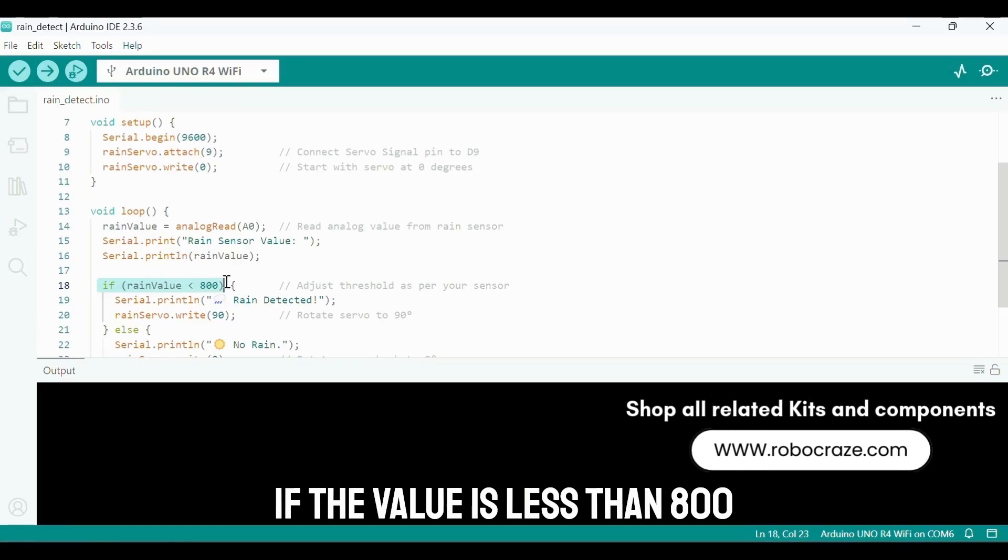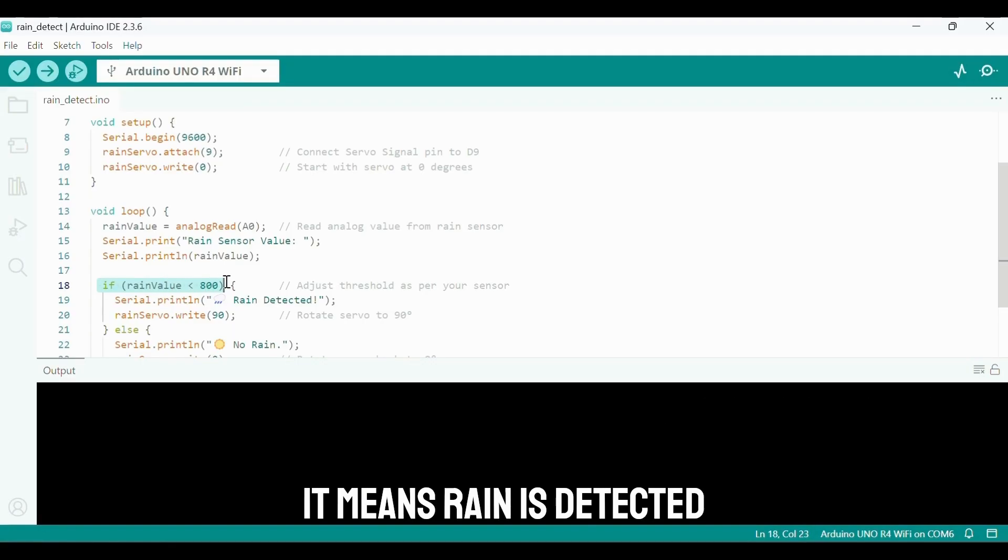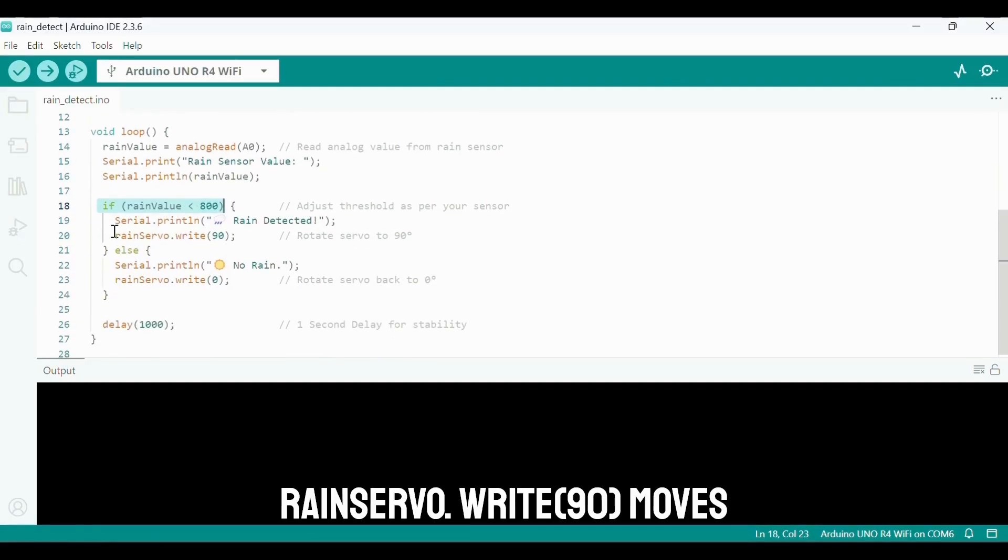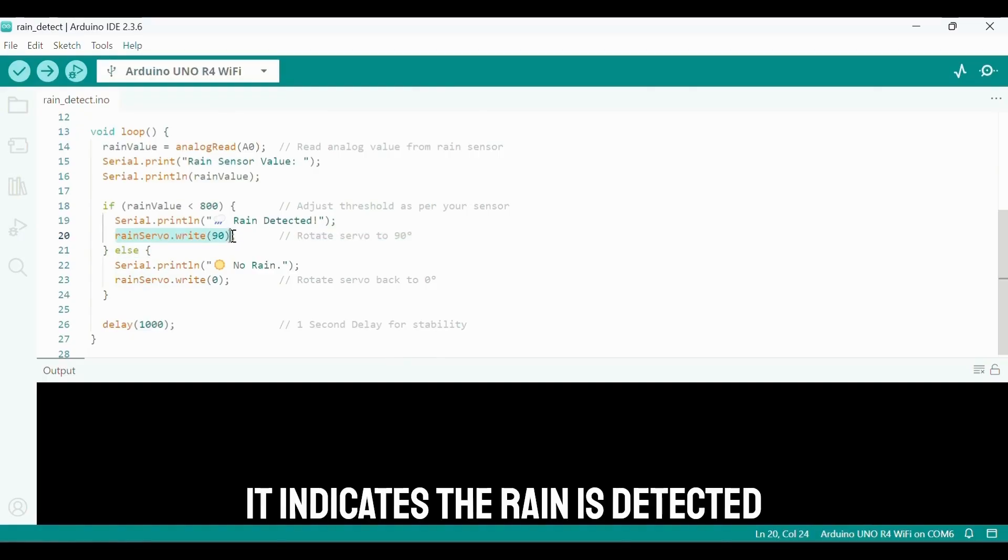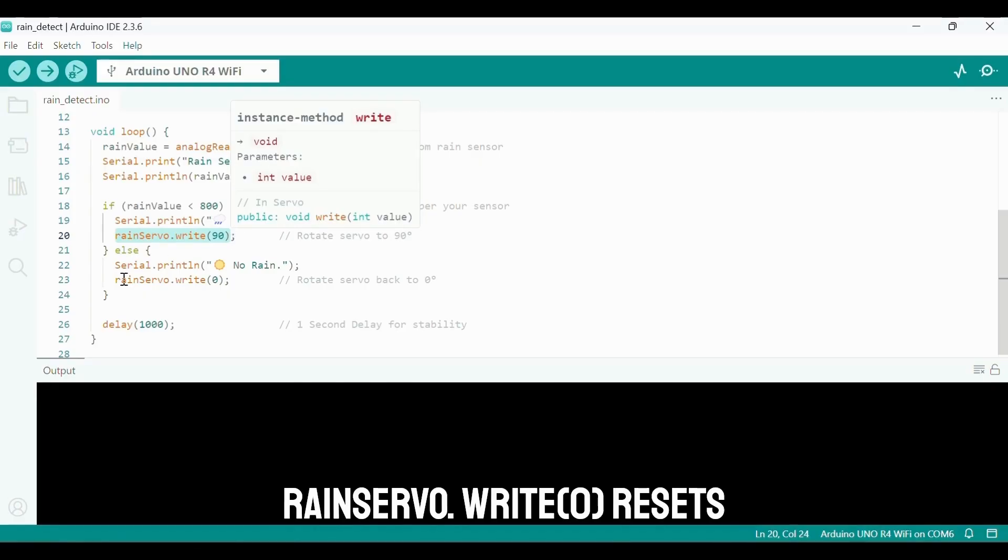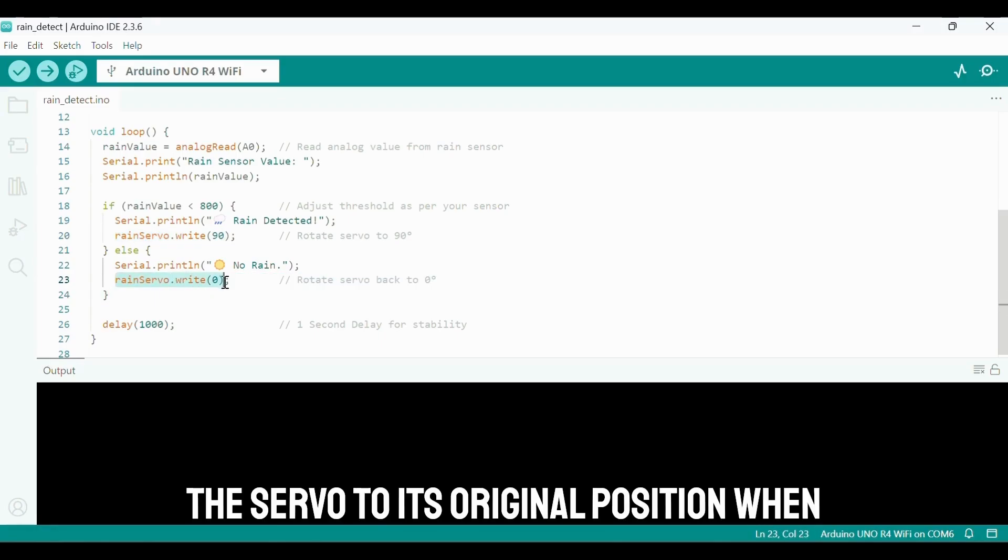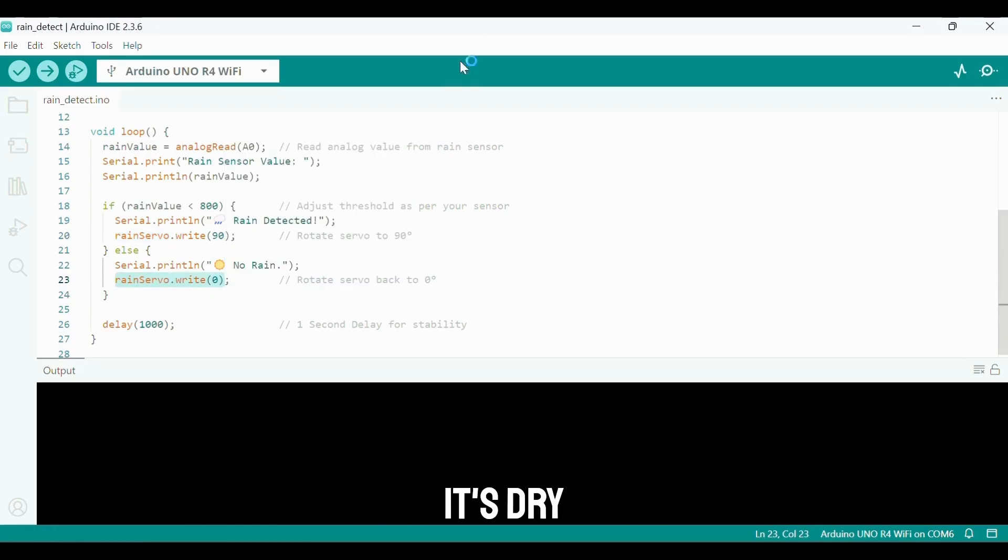If the value is less than 800, it means rain is detected. rainservo.write of 90 moves the servo to 90 degrees. It indicates the rain is detected. rainservo.write of 0 resets back the servo to its original position when it's dry. Alright, let's test it.